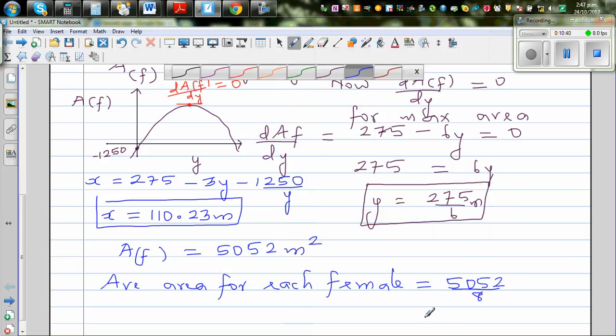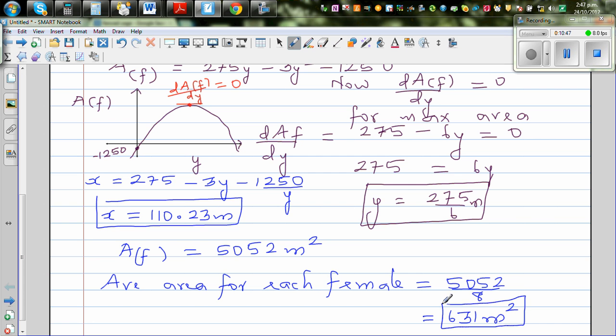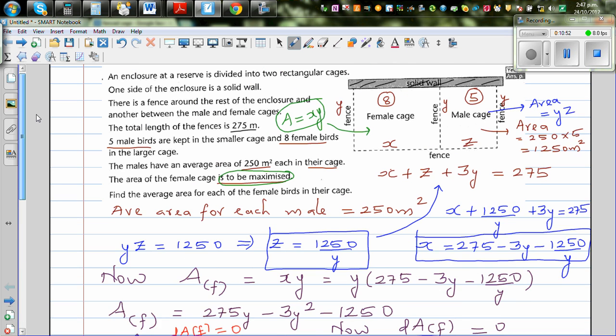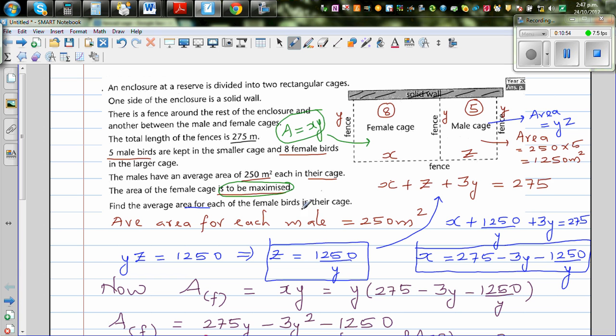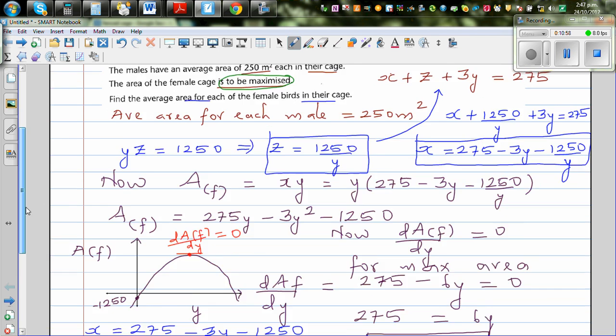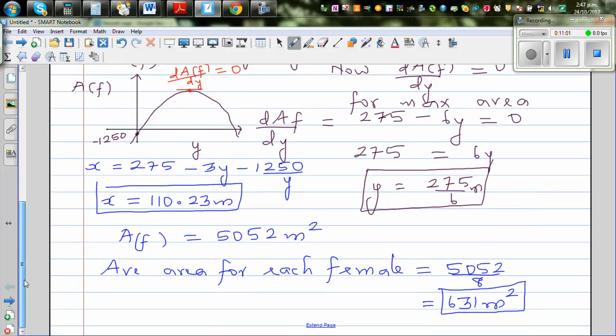Average area for each female would be this number divided by 8 because there are 8 females. So 5052 divided by 8 is 631.5 meters squared. You can round it to 631 or 632 meters squared. So the average area for each female in the cage is 631 meters squared.